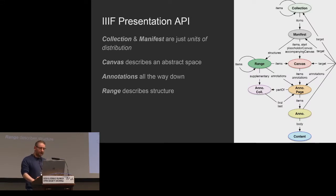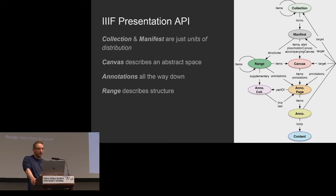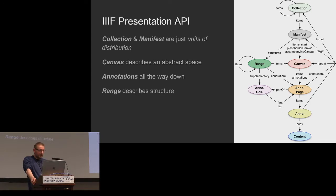The IIIF Presentation API is the most important one and the one I'm going to focus on today — it's really about creating structure and describing works. Basically, collection and manifest are just units of distribution, like a Matroska container. A canvas is an abstract space with a width, height, and duration. You annotate content onto that, and range can describe further structure, like chapters in a DVD.